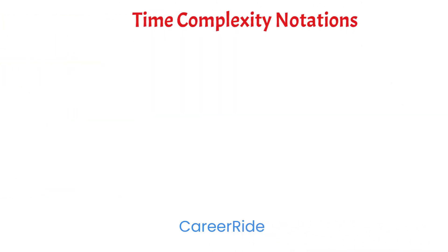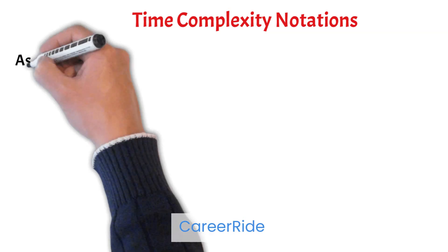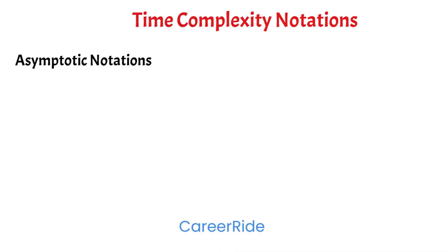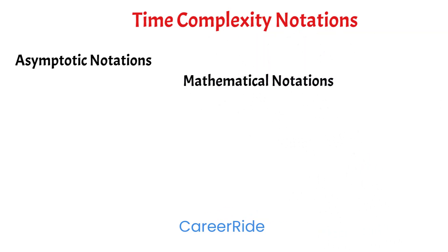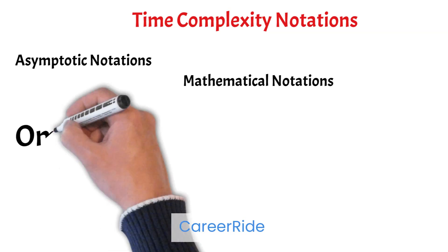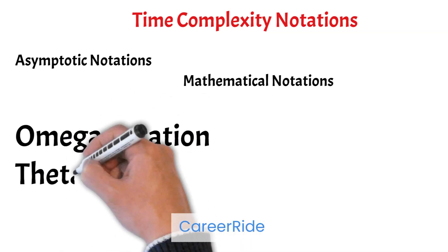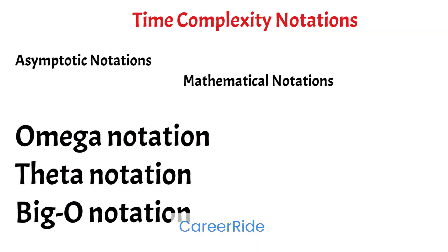Now coming to time complexity notations. Time complexity is represented with the help of asymptotic notations. Asymptotic notations are mathematical notations used to describe the running time of an algorithm. There are mainly three asymptotic notations: omega notation, theta notation, and Big O notation.